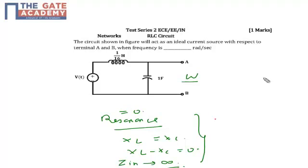The resonance frequency is 1 by root LC. So my resonance frequency will be 1 by root, value of L is given as 1 by 16 and value of C is given as 1 farad. This value is 4 radian per second.